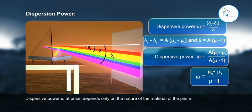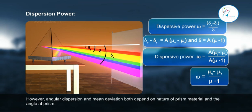Dispersive power ω of a prism depends only on the nature of the material of the prism. However, angular dispersion and mean deviation both depend on nature of prism material and the angle of prism.